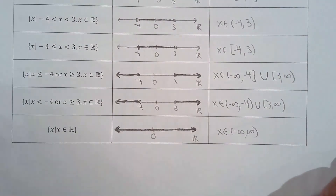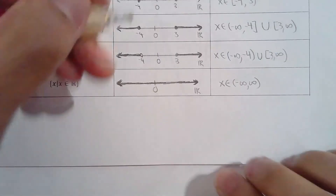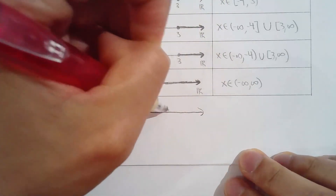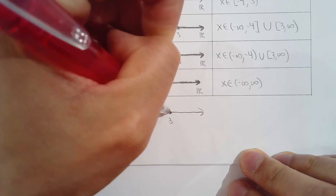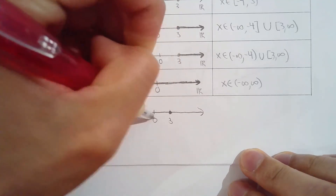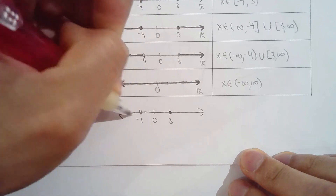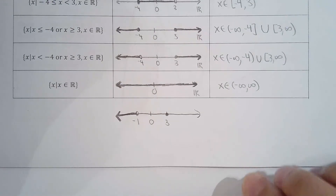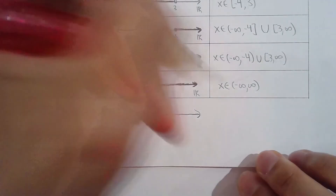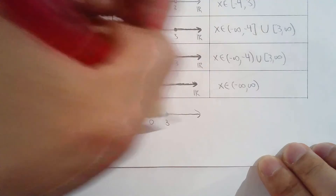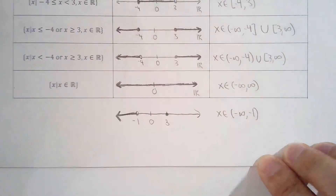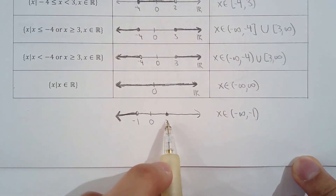I want to add one example because we'll deal with cases where you only want to include one value. Let's say we have anything less than negative 1 — open circle — or just the value 3. So anything less than negative 1, or 3. How do you use interval notation to depict that? Less than negative 1 is easy. But how do you just depict a single value like 3?